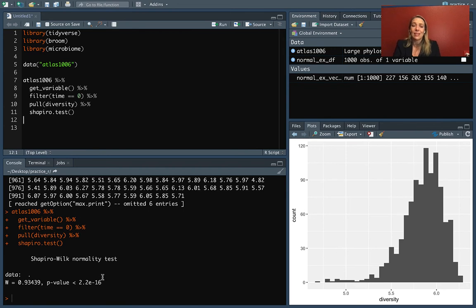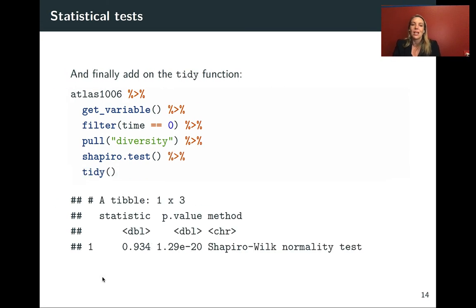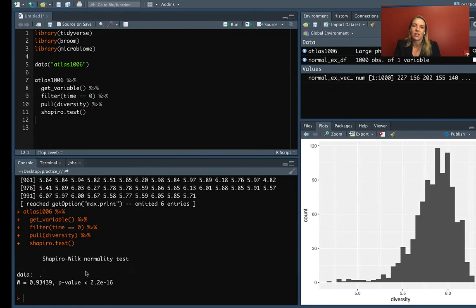Now we can pipe that into the Shapiro test. That gives us the output. We've got this p-value that's very, very small, much smaller than 0.05. So again, we're seeing a lot of evidence that we might want to reject the null in this case. The null hypothesis is that the data are normally distributed.